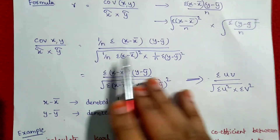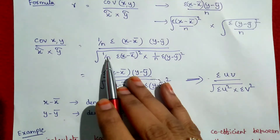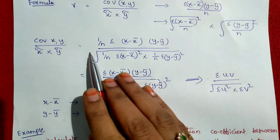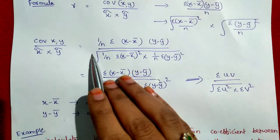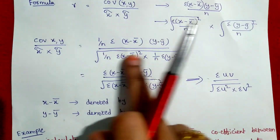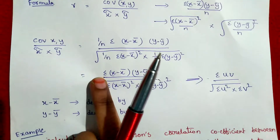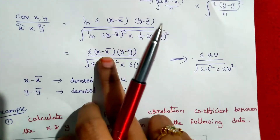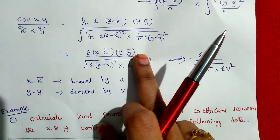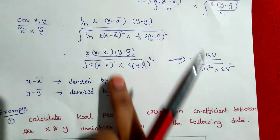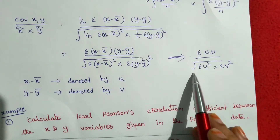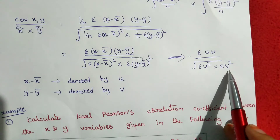Note this: the 1 by n terms combine to give 1 by n-squared in the numerator and denominator, which cancel out. So if we let x minus x-bar be denoted by u, and y minus y-bar be denoted by v, then the formula simplifies to: r equals summation uv divided by the square root of summation u-squared into summation v-squared.